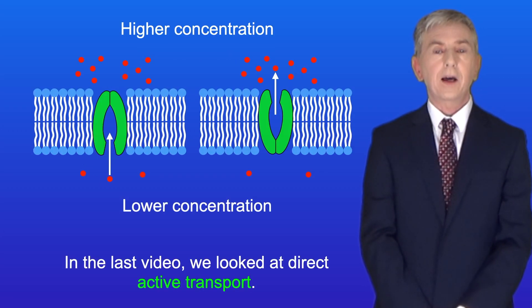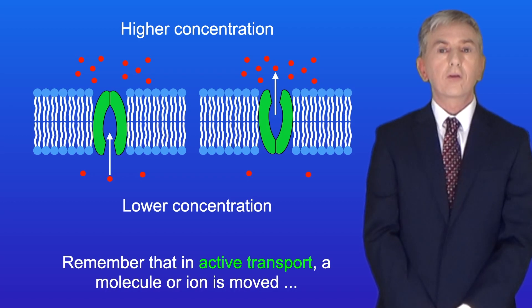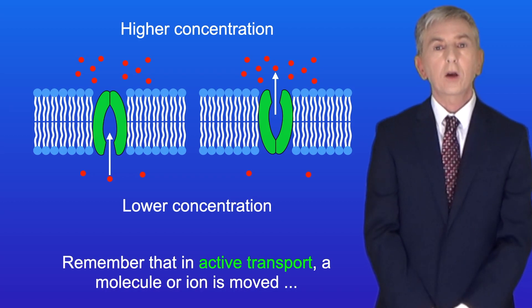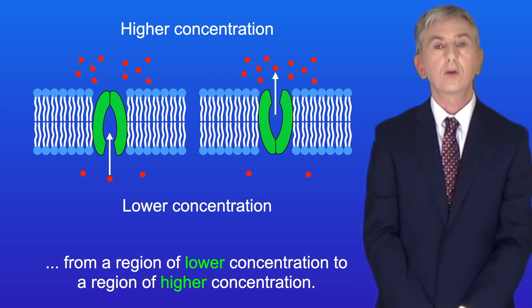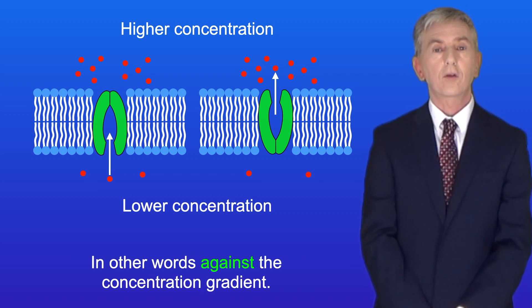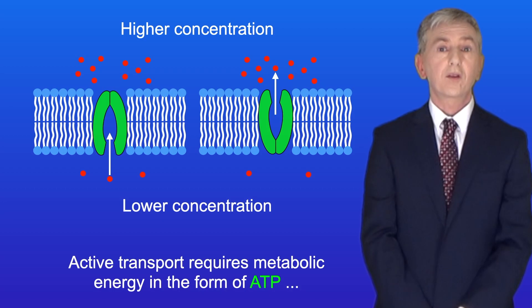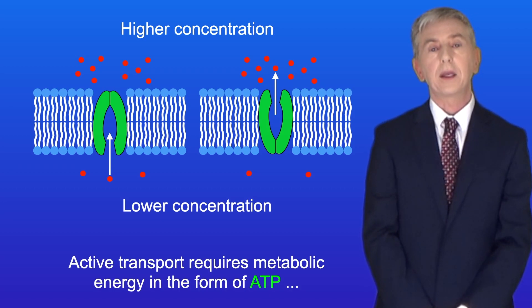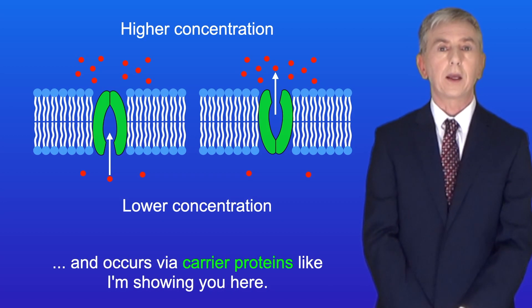In the last video we looked at direct active transport, and if you haven't watched that video then I'd recommend you watch it now. Remember that in active transport a molecule or ion is moved from a region of lower concentration to a region of higher concentration — in other words against the concentration gradient. Active transport requires metabolic energy in the form of ATP, and occurs via carrier proteins like I'm showing you here.